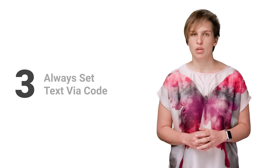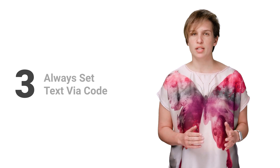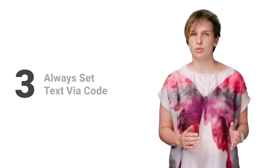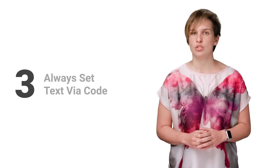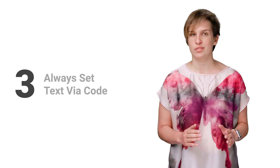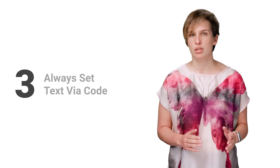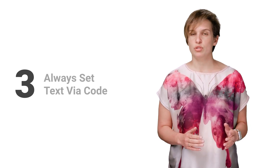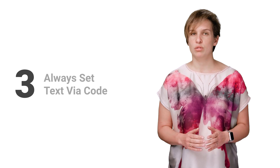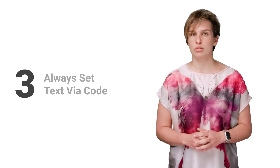Three: always set text displayed to the user via code. Try to avoid setting the text in Interface Builder, even if it's text that doesn't change throughout the entire life cycle of the app, like the OK button text on that alert. These texts and all others should be set via code so they can be easier to localize.